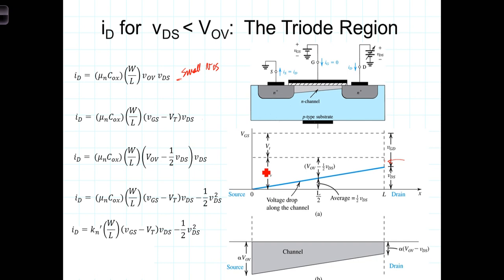And also we can say then, that the charge contained in the channel will be proportional to that average VOV minus one-half VDS. We can then modify these two equations, which correspond to small VDS, to this equation right here, replacing VOV with the average voltage inducing the channel of VOV minus one-half VDS.